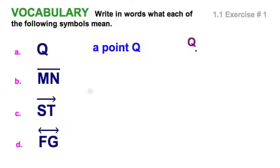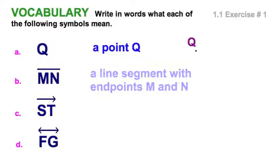MN with a bar on top is clearly a line segment. It's a line segment that contains the endpoints M and N, and would look something like this. Of course, it doesn't have to be horizontal. We write MN as though it reads left to right, but this is also segment MN. So we've got that down.